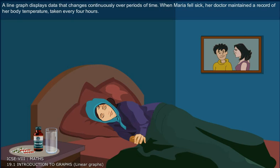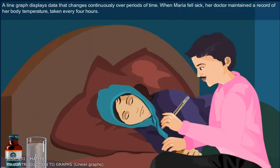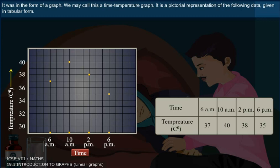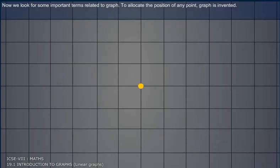When Maria fell sick, her daughter maintained a record of body temperature taken every 4 hours. It was in the form of a graph. We may call this a time-temperature graph. It is a pictorial representation of the following data given in tabular form.